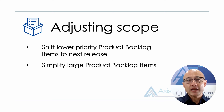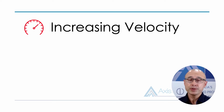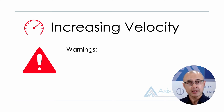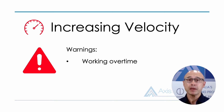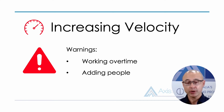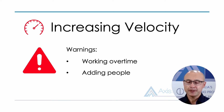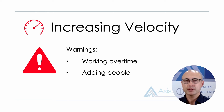If you can't adjust scope, then you'll need to increase the team's velocity. Two common go-to's that I need to warn you on: the first is getting the team to work overtime, and the second is adding people to the team. Overtime is certainly an option, but be careful — if you do it too often the team will get burnt out, make more mistakes, and can lose motivation. Use it as a last resort, not a first one.